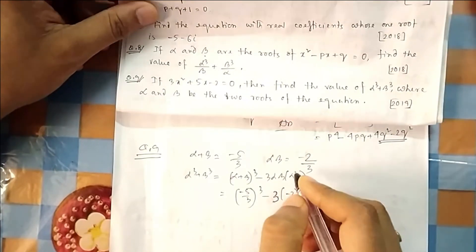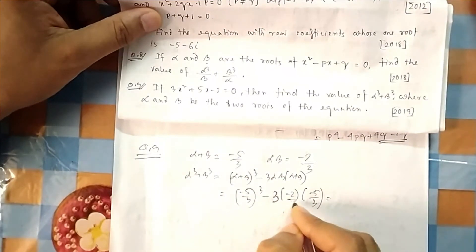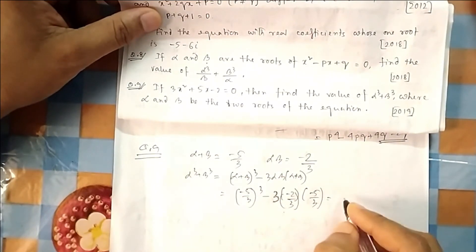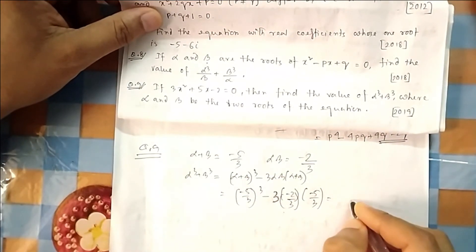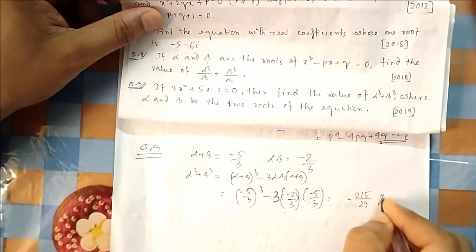And αβ is -2/3. So if you do it, I am not doing it. If you simplify it, finally you will get 25/27 is the answer.